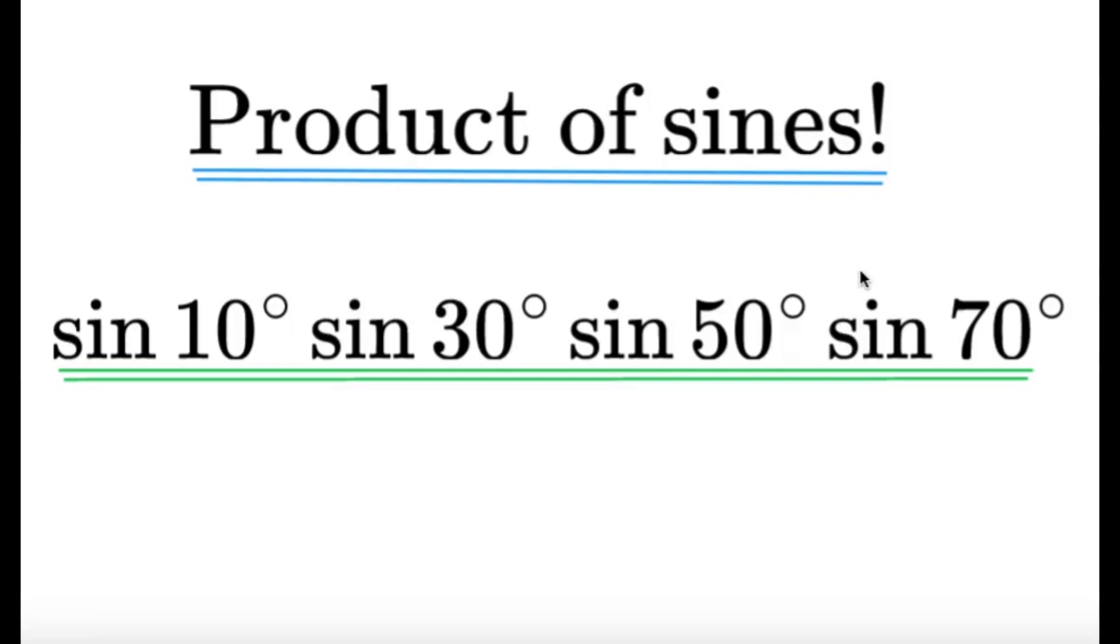Evaluate the product of sines: sin 10 degrees, sin 30 degrees, sin 50 degrees, sin 70 degrees. As usual, pause this video if you'd like to give this item a try. But if you're done, let us dive into the solution.